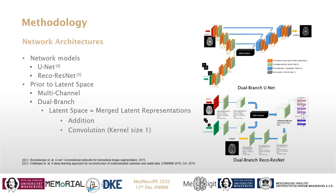For our second approach, we created a dual-branch version of the networks, as can be seen on the right. The corrupted images were provided to the first branch of the networks.